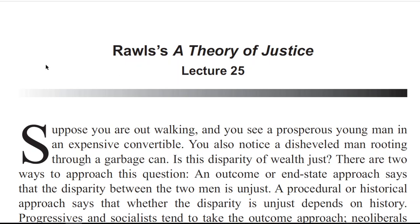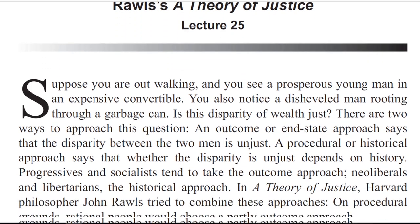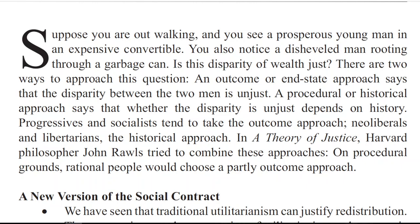Suppose you are out walking and you see a prosperous young man in an expensive convertible. You also notice a disheveled man rummaging through a garbage can. Is this disparity of wealth just? There are two ways to approach this question. An outcome or end-state approach says the disparity is unjust. A procedural or historical approach says whether the disparity is unjust depends on history. Progressives and socialists tend to take the outcome approach; neoliberals and libertarians, the historical approach.